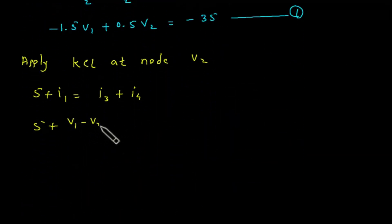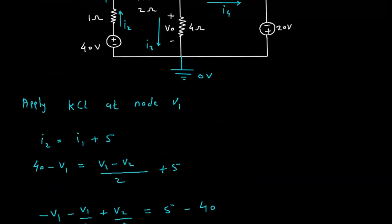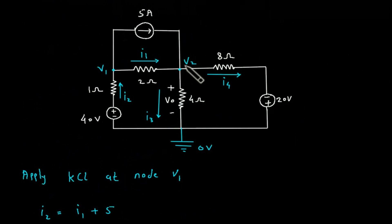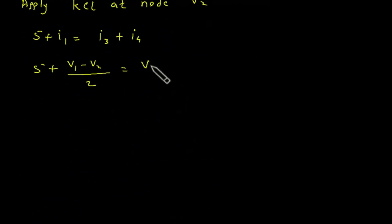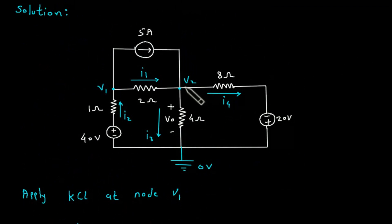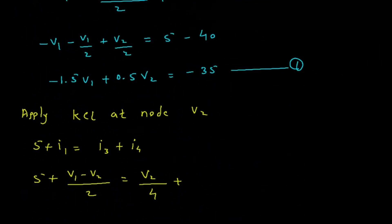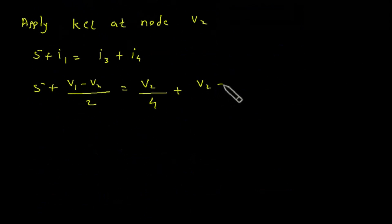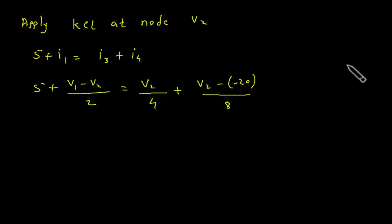So: 5 plus I1 = I3 plus I4. I1 is (V1 minus V2) / 2. I3 is (V2 minus 0) / 4, and I4 is (V2 minus 20) / 8.